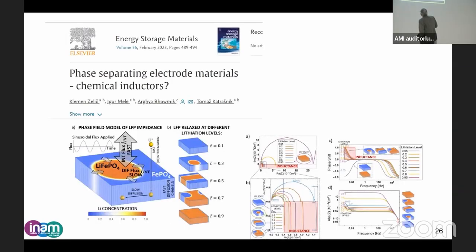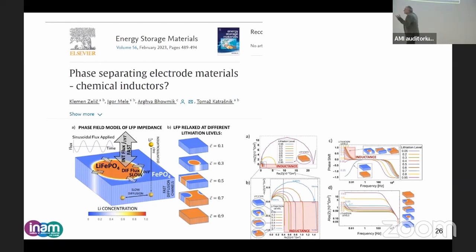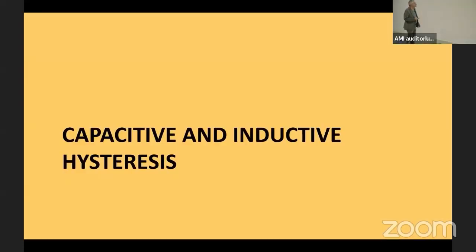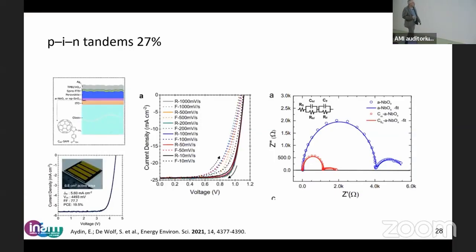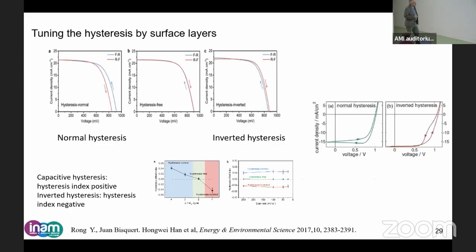This is the first — people like the chemical inductor name, now they're publishing papers about it. This is phase-separating electronic materials. It's just a name, but it's an inductor that will appear in many places. So now we apply it to the perovskite and come back to the issue of the inverted hysteresis.